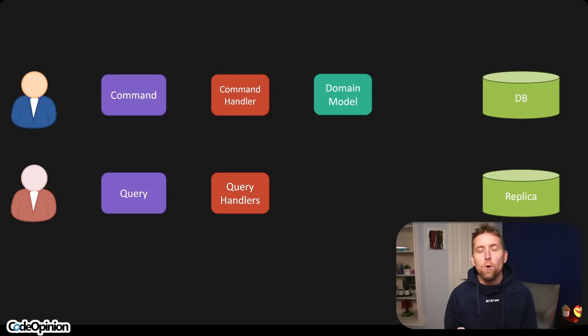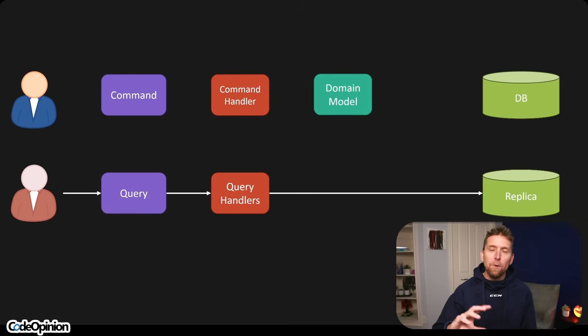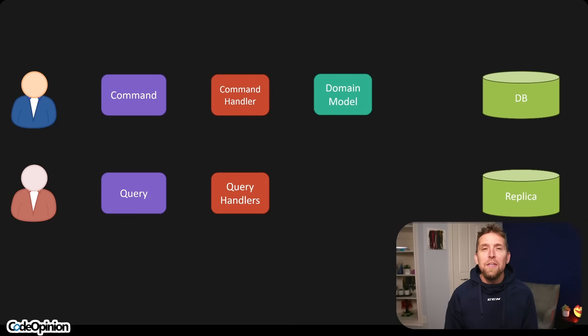Typically, what the problem here is the context — specifically when you're trying to read your own write. A user performs some action making a state change, and then the application, from that user's perspective, is immediately trying to show that data from the other source that's eventually consistent. That's why you're seeing stale data. Eventual consistency isn't the problem here; it's the context in which you're using it. Now, if you weren't trying to read your own write — meaning somebody else is trying to read it — that potentially isn't a problem because they don't know it's happening. If one user makes a state change and another user reads something related to it and gets stale data, they don't know it's stale.